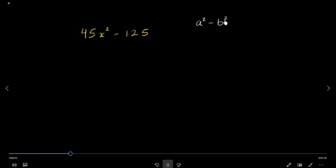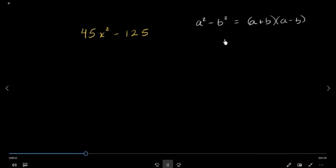There is no problem. If we have a squared minus b squared, then there is a plus b and a minus b.